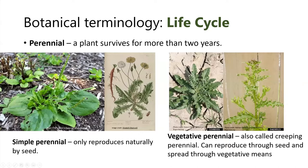The final life cycle we'll discuss are perennials — plants that survive more than two years. There are two main groups: simple perennials and vegetative perennials. Simple perennials reproduce naturally only from seeds and normally do not reproduce vegetatively. They can have different root structures — broadleaf plantain, for example, is a simple perennial with a fibrous root system, as opposed to dandelions, which have a serious taproot that most people have experienced when trying to pull them up.